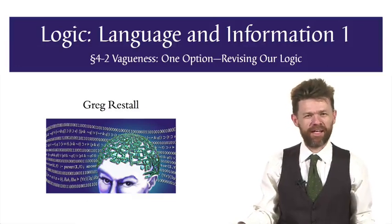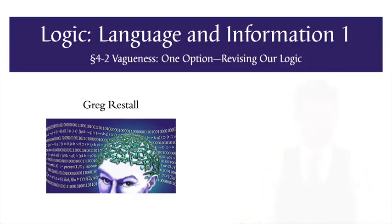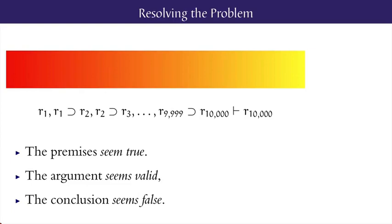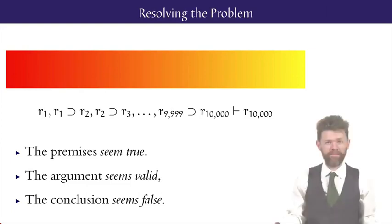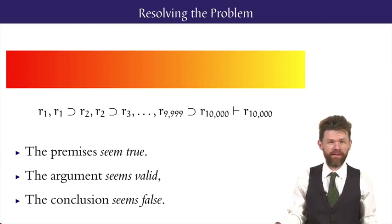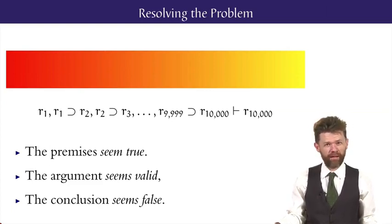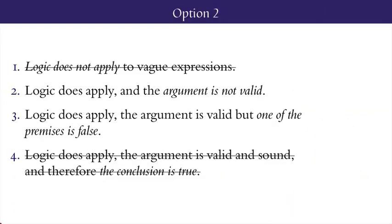Welcome back to the philosophy section of logic, language, and information. We're looking at vagueness in the Sorites Paradox. We've got an argument which seems to be valid, which leads from premises which seem true, to a conclusion that seems false. These seemings can't all be right. In this lesson, we'll look at the way out that rejects the validity of the argument. This is one of the four options in response to the Sorites Paradox.